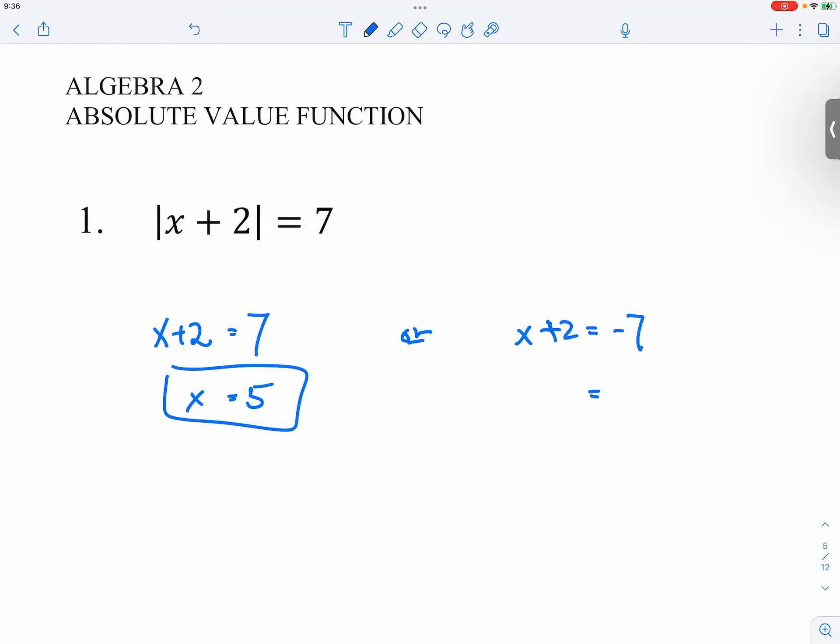And then you say, x plus two equals negative seven. You subtract two on both sides, so x is equal to negative nine.